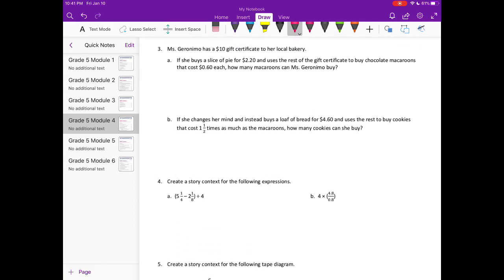Number three. Mrs. Geronimo has a ten dollar gift card to her local bakery. If she buys a slice of pie for two dollars and 20 cents and uses the rest of the gift certificate to buy chocolate macaroons that cost 60 cents each, how many macaroons can Mrs. Geronimo buy? She has a ten dollar gift certificate, she buys a slice of pie for $2.20 and uses the rest. So first let's figure out what the rest would be. Ten dollars minus two dollars and twenty cents.